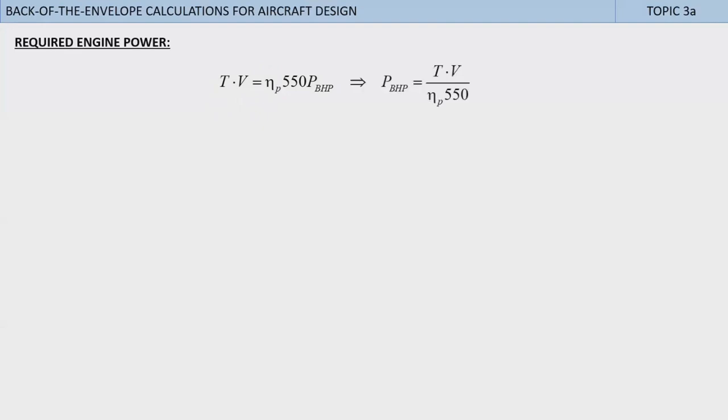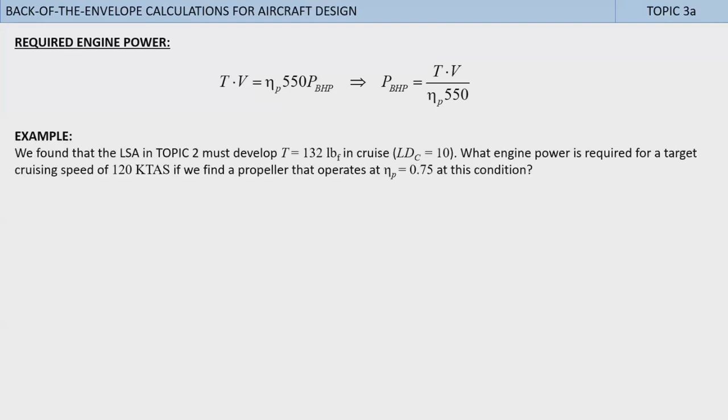It has one and only one maximum value for fixed-pitch propellers, and a relatively constant high value for a range of airspeed, or more appropriately advance ratios, for constant-speed propellers. Thus, in the early design phase, when we haven't even talked to a propeller vendor, its magnitude requires an educated guess. That said, we can solve this equation for the engine power as shown here. Now, let's apply it to the LSA of previous topics. As you will see, we will be able to extract a lot of information about our design in this topic. In short, we found that the LSA in topic 2 must develop thrust equals 132 pounds in cruise, assuming an LDc of 10.